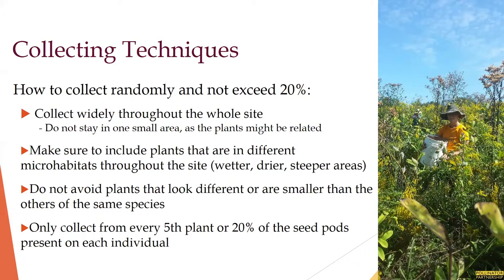Now that we've discussed how to scout and assess a site and what gets collected, what are the best management practices for collecting seed? We follow the Bureau of Land Management's Seeds of Success Program recommendation of collecting no more than 20% of an individual plant's reproductive output in the year. You want to collect 20% and leave that other 80% to the landscape. We need to be good stewards and ensure that we're not negatively impacting our collection site in order to help the monarchs and rusty patch bumblebees. We want to leave that 80% of the seed to perform its natural ecosystem function of reseeding the populations, providing habitat, and feeding wildlife.